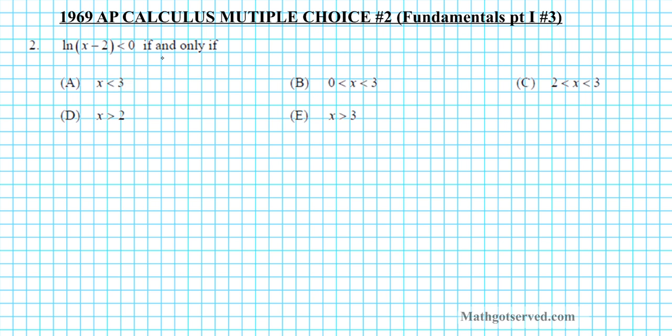So let's go ahead and solve this equation first. We have ln(x - 2) has to be less than 0. So if I wanted to solve this equation, I'll exponentiate both sides using e as the basis of exponentiation. So I'll have e raised to the natural logarithm of x minus 2 is less than e raised to the 0th power.